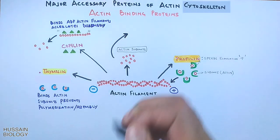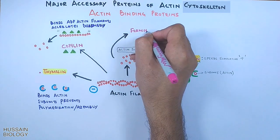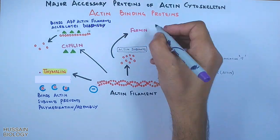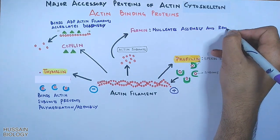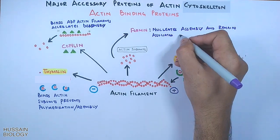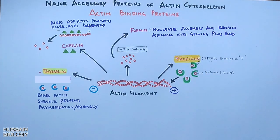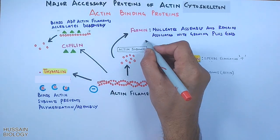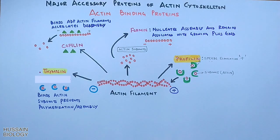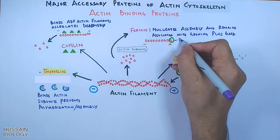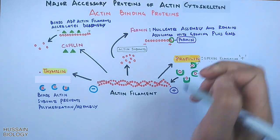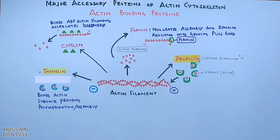Then there is formin protein. It nucleates assembly and remains associated with the growing plus end. Formin generates unbranched filaments to initiate nucleation, which is the crucial step in actin filament formation.